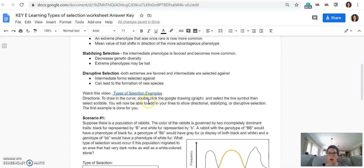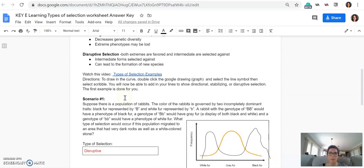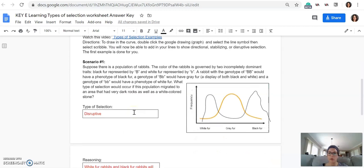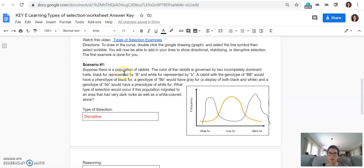So you should have watched this YouTube video linked here. This first scenario, which was done for you, but I still would like to talk through it. So there's a population of rabbits, and they have two incompletely dominant traits. So the black fur, which is capital B, and lowercase b, which is white fur. So they're either black or white. But there's an intermediate form, which is gray.